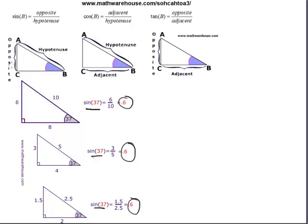And if you just go back to our basic definitions of sine as opposite over hypotenuse, the sine of 37 is opposite 6 over hypotenuse 10. The sine of 37 in this triangle is opposite 3 over hypotenuse 5. And in this one, 1.5 over 2.5. And again, the point of these is to show you that the sine of any angle, whether it's 37 or if you wanted to find the sine of 30, it's always the same no matter how big or small the triangle is.